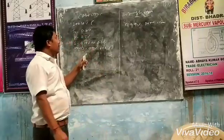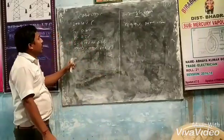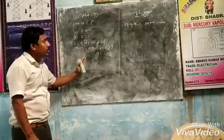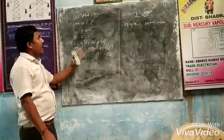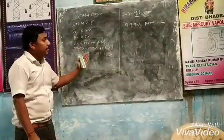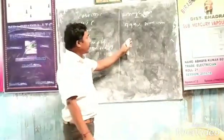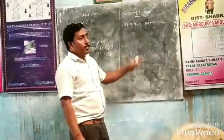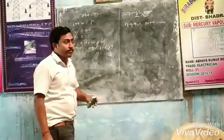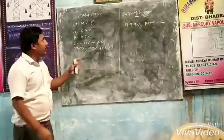Cast iron has a granular structure and it is a brittle metal. Wrought iron has a fibrous structure.